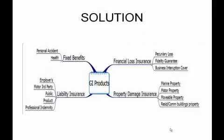The solution for this I've given you in a diagram. These are all the different types of general insurance products that you may be able to purchase. They are split into 4 different categories: fixed benefits, financial loss insurance, liability insurance, and property damage insurance.